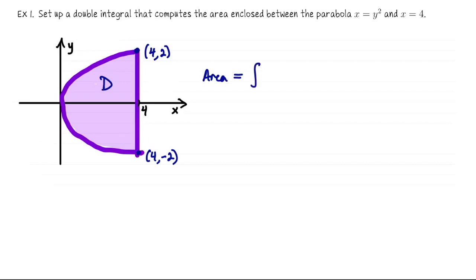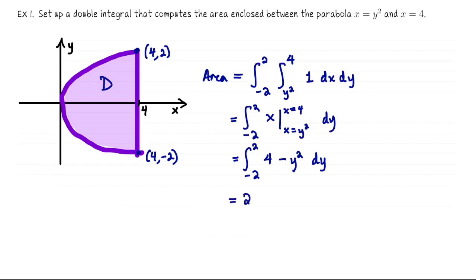This area is the integral from negative 2 to 2, the integral from y squared to 4, of 1 dx dy. We anti-differentiate first with respect to x, leaving us with the integral from negative 2 to 2 of 4 minus y squared dy. This is even symmetric with respect to y, so I'm going to write this as twice the integral from 0 to 2 of 4 minus y squared dy. That's 2 times 4y minus y cubed over 3, which is 32 thirds.